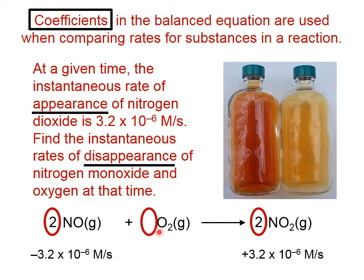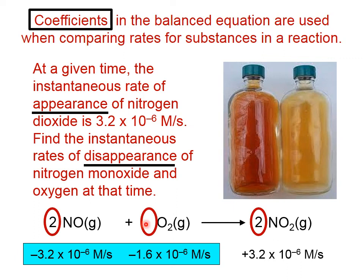The oxygen has a coefficient of 1. We don't write it, but it's understood to be there, which means that rate of disappearance will be half, that is, from 3.2 to 1.6, compared to what the NO is disappearing at. The rates are proportional to the coefficients in the balanced equation, with negative signs being put in front of reactants because they're disappearing, and positive signs being put in front of products because they are appearing.